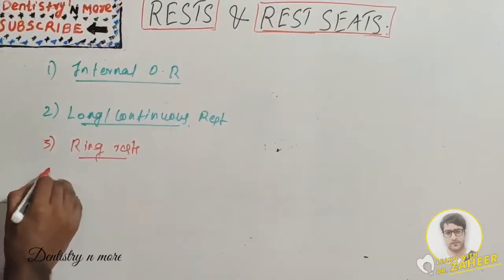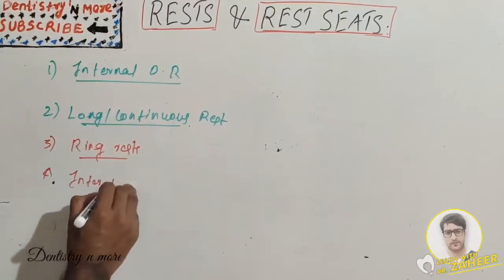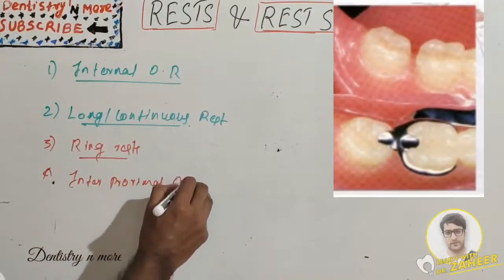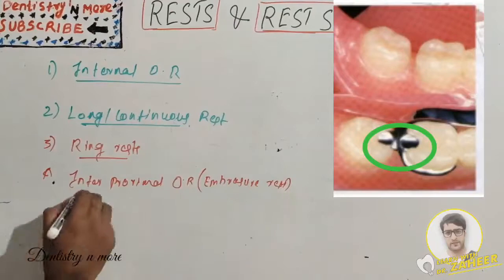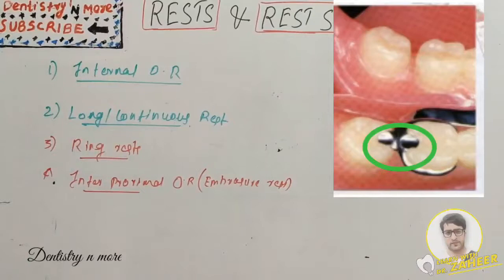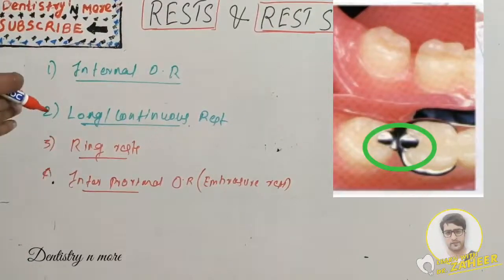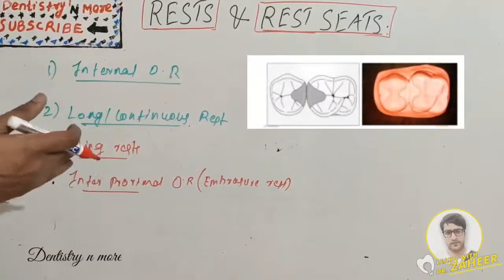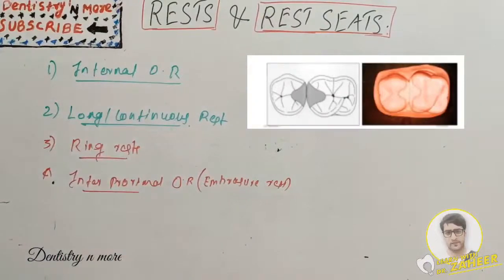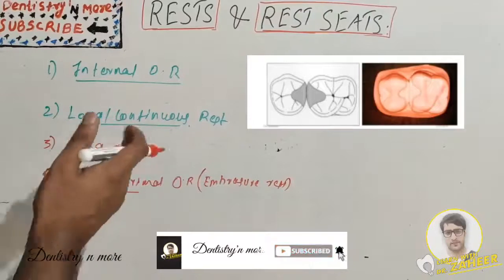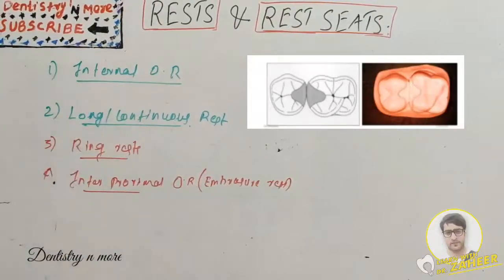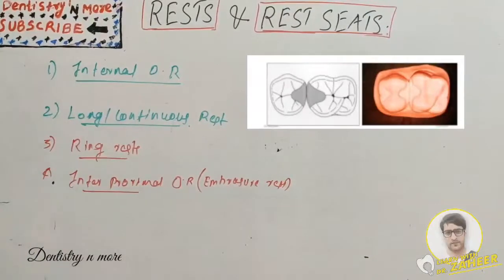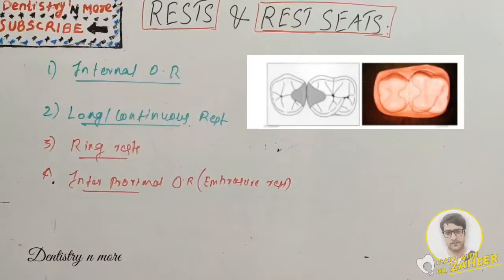The fourth type is the interproximal occlusal rest. These are prepared as individual but adjoining occlusal rest seats. The preparations must be extended further lingually. Adjacent rests rather than a single rest are used to avoid interproximal wedging by the framework and to shunt the foot away from the contact points.